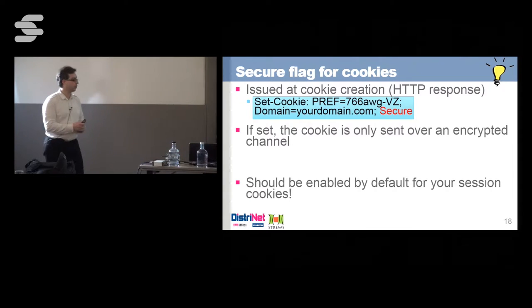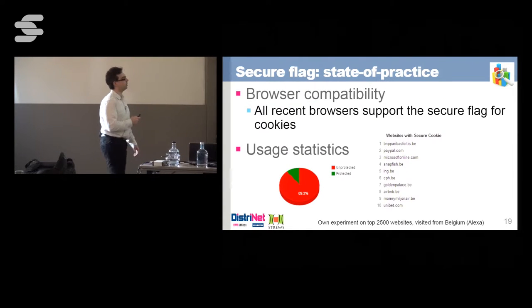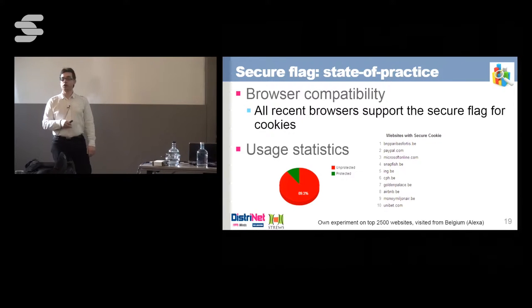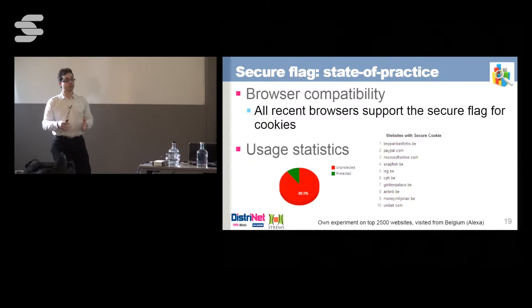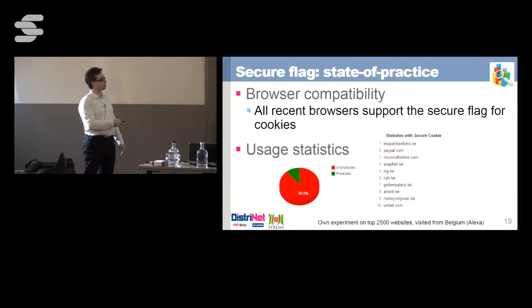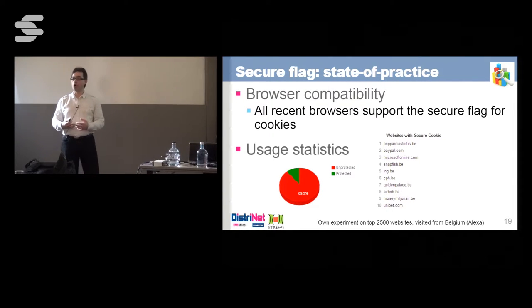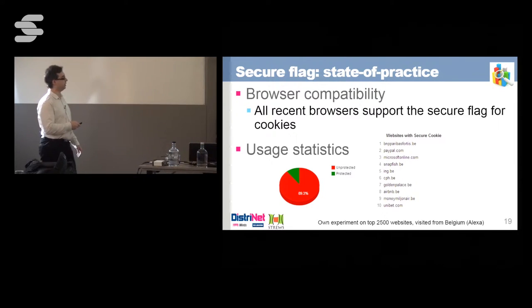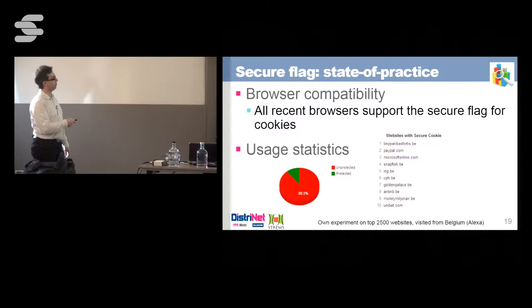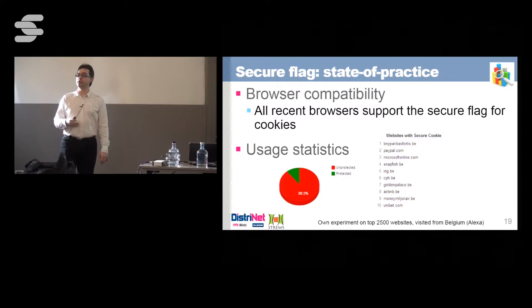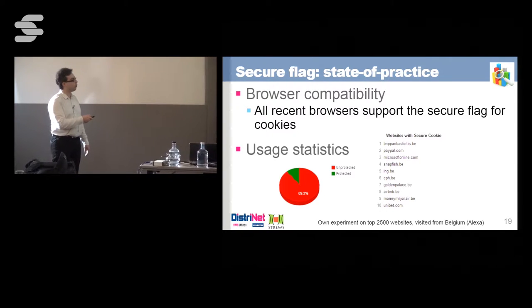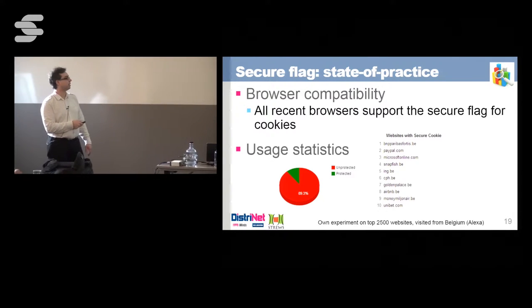I think it's important to have a feeling for the adoption rate of each technology. To measure this, we visited the top 2,500 websites visited from Belgium — using Alexa to identify the most popular Belgian webpages — and measured how much of the technology I present today they were actually adopting. For the Secure flag on cookies, only around 10% of websites were using it in our experiment about one year ago. And it's not surprising that some of the banks already appear in the top list.